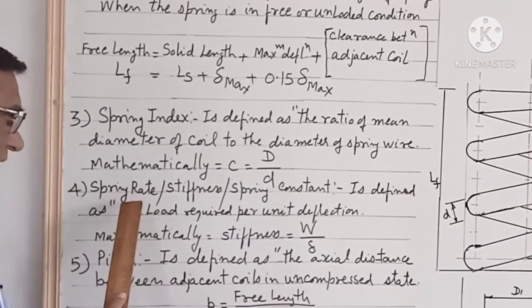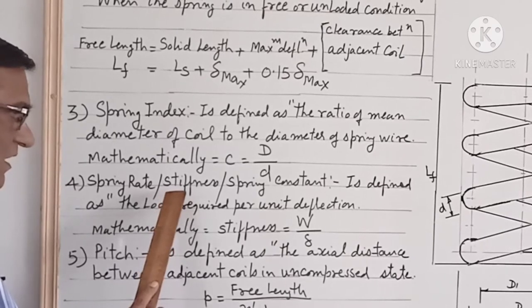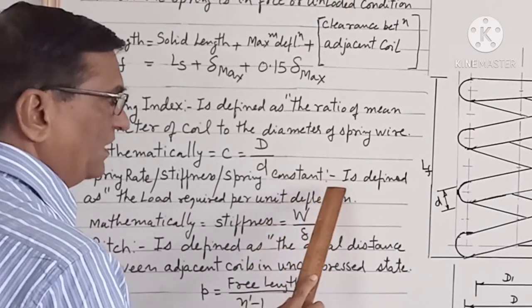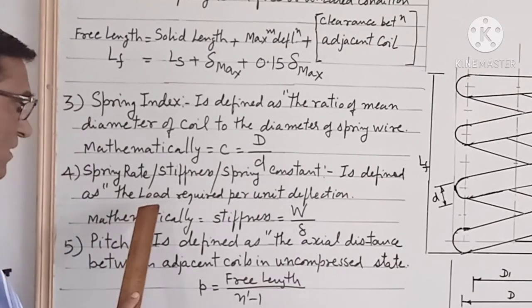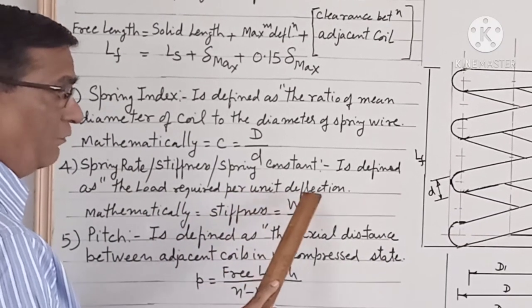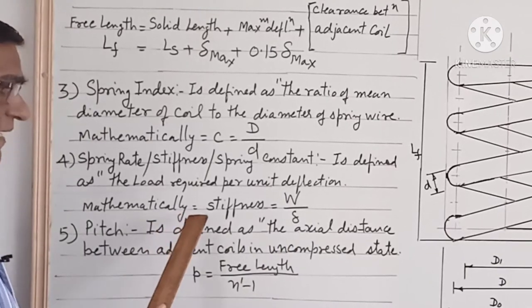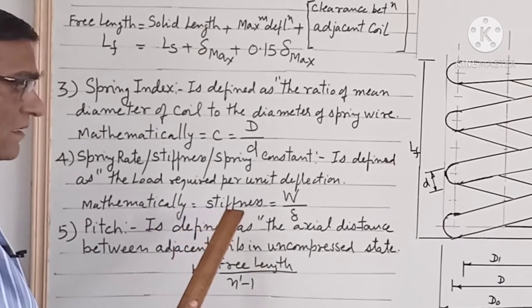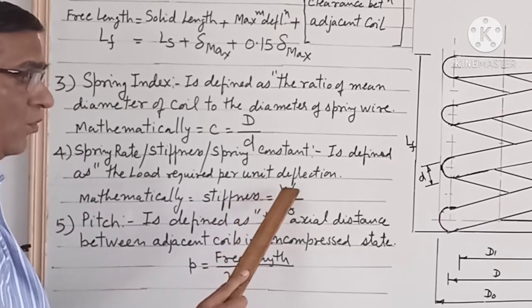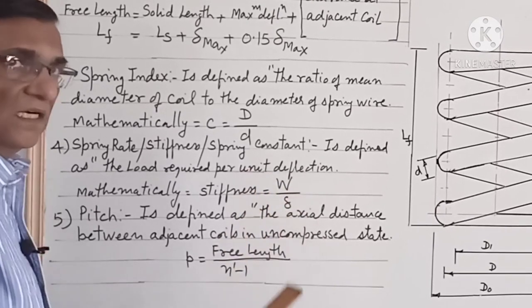Spring rate, or stiffness, or spring constant is defined as the load required per unit deflection. Mathematically, stiffness is equal to load upon deflection, that is W upon δ.